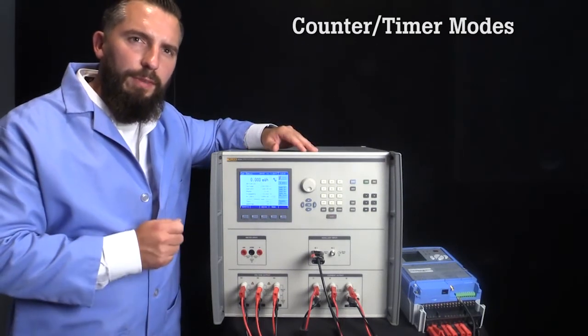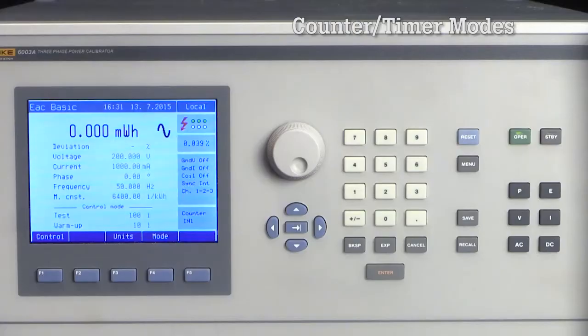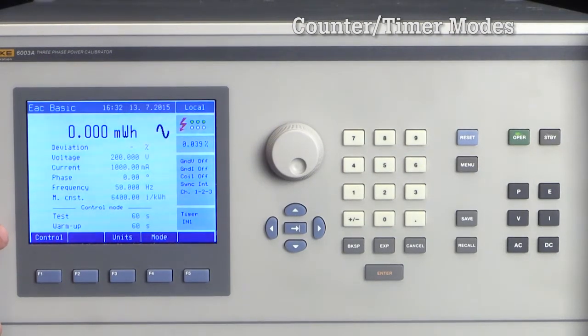To demonstrate, I've configured this test for 200 volts AC, 50 hertz, and 1 amp. If I use the counter mode, the 6003A lets you specify the warm-up pulses from the meter under test. If I were using the timer mode, I could set how many seconds I want the warm-up time and the test to run for, as I show here. For this demonstration, we will use the counter mode.